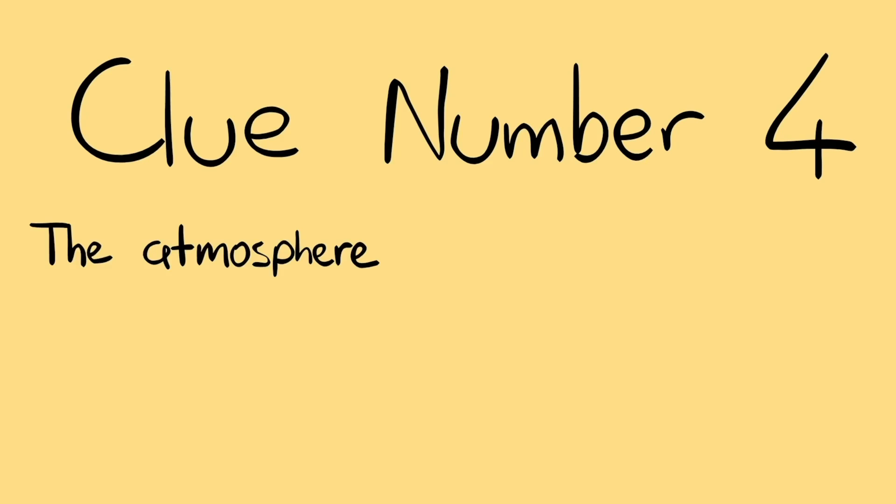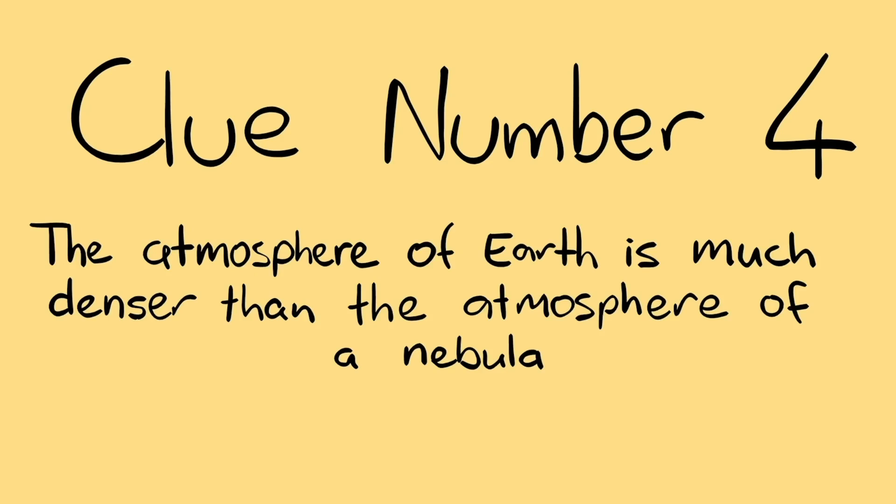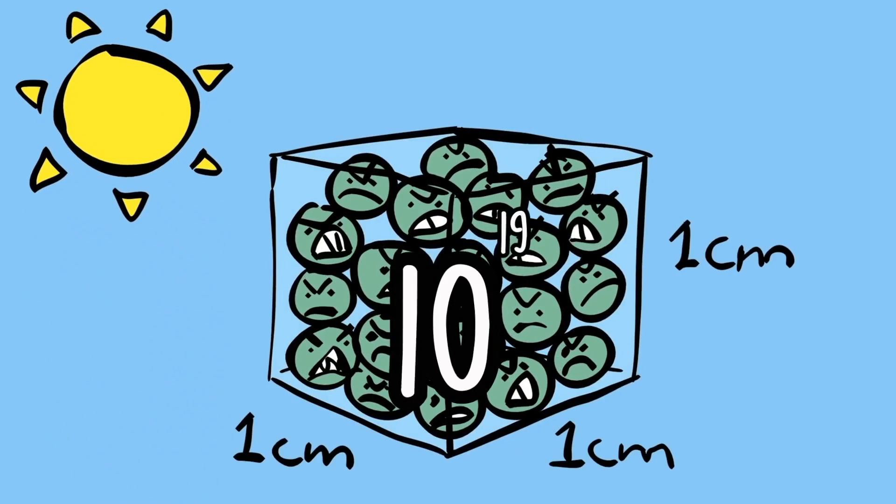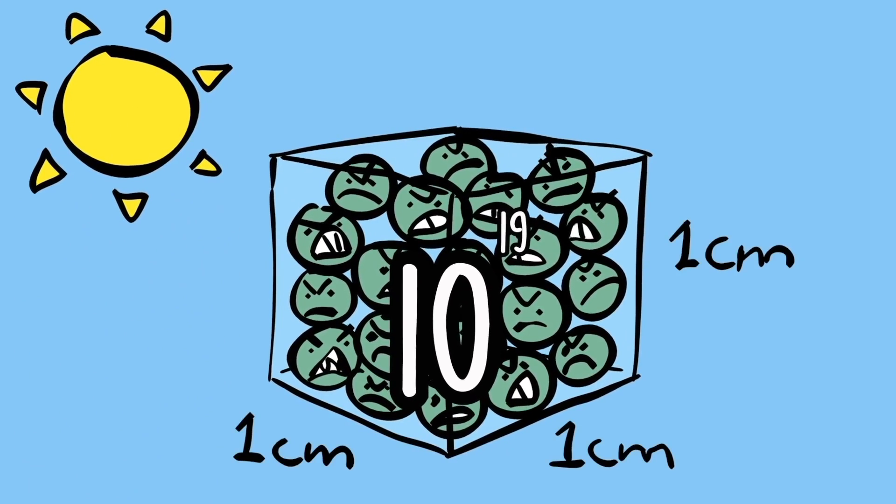The final clue, clue number four: the atmosphere of Earth is much denser than the atmosphere of a nebula. This is the final piece of the puzzle. On Earth, our atmosphere has over 10 to the power of 19 atoms per cubic centimeter.